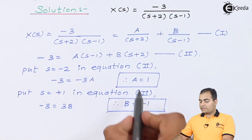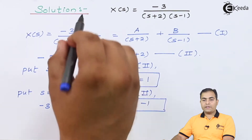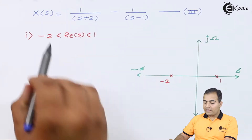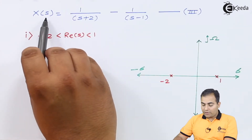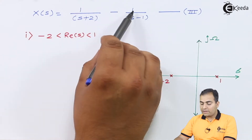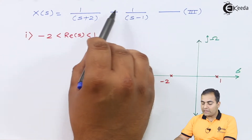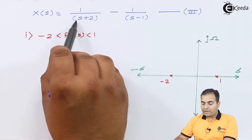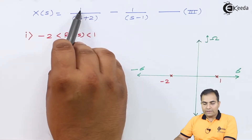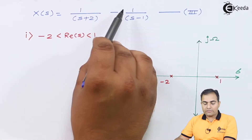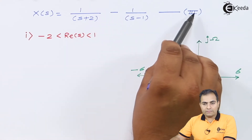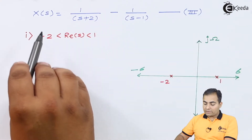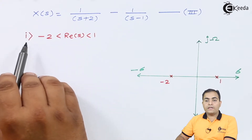Substituting A = 1 and B = -1 back into equation 1, we get X(s) = 1/(s+2) - 1/(s-1). The sign is changed because B was -1. This is equation number 3, which we will now use to find the inverse Laplace transform based on each of the three ROCs.